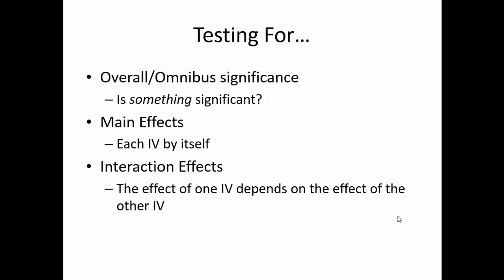So what will we be running? First, an omnibus ANOVA will be necessary to determine if any of the mean differences are significant. Unfortunately, this overall omnibus ANOVA will not tell us between which averages there is a significant difference. Thus, we will also want to run post-hoc tests that will help determine exactly where the significant differences occur.